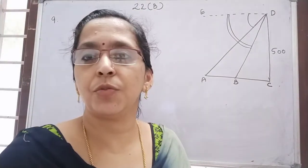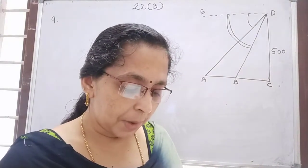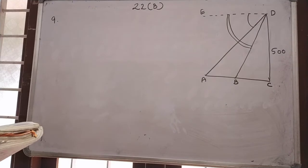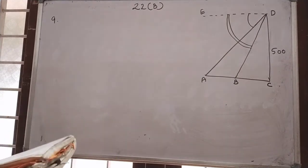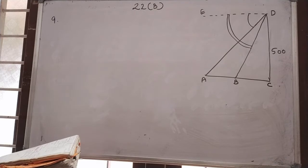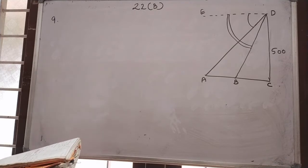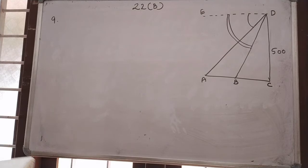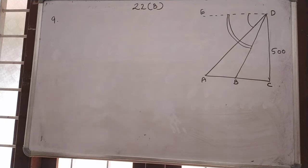Today we can discuss exercise 22B, course number 9 onwards. A man on a cliff observes a boat at an angle of depression 30 degrees, which is sailing towards the shore to the point immediately beneath him. 3 minutes later, the angle of depression of the boat is found to be 60 degrees. Assuming that the boat sails at a uniform speed, determine first, how much more time it will take to reach the shore, and second, the speed of the boat in meters per second if the height of the cliff is 500 meters.